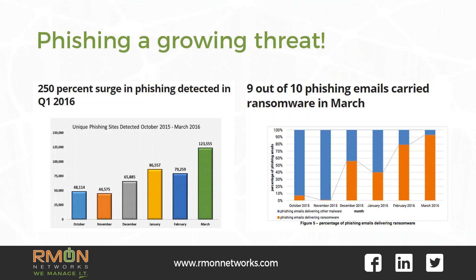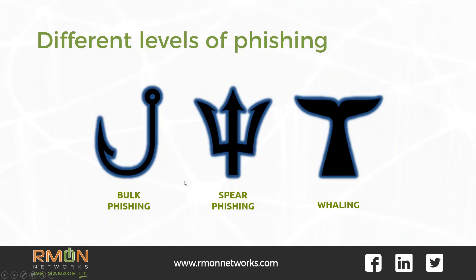To put this into perspective: if a hacker sends out 20,000 generic phishing emails with a ransomware virus demanding $100 per victim, and only 3% of people click the link, the hacker just made $60,000. You can see how lucrative this is for cyber criminals, so don't expect these trends to slow down.